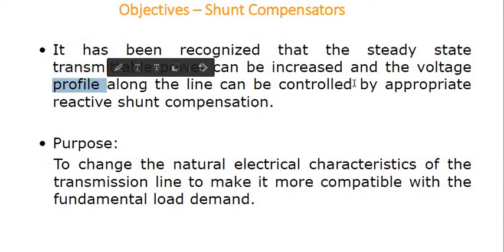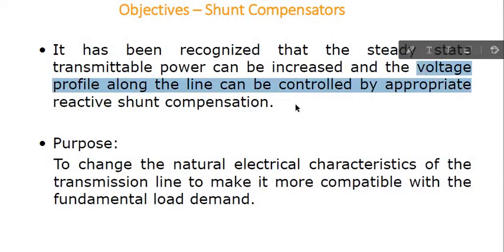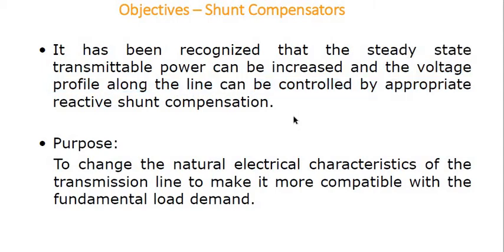We can increase the voltage profile along the line using shunt compensation. The main purpose of the shunt compensator is to change the natural electrical characteristics of the transmission line to make it more compatible with the fundamental load demand — to make it easier to carry the load without any voltage instability or power oscillation. This means they change the natural characteristics of the transmission line.